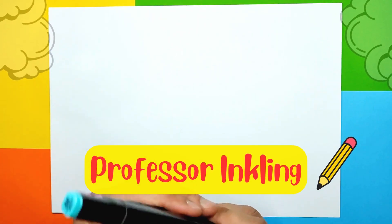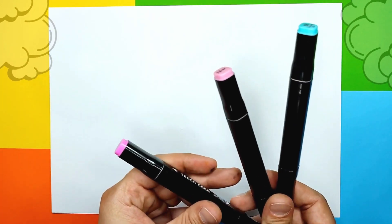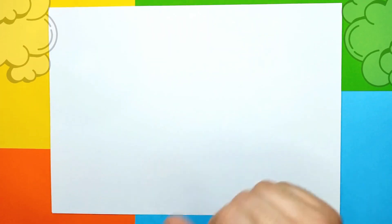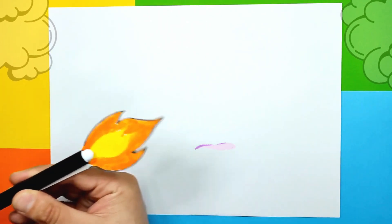Today we are going to draw Professor Inkling from Octonauts and we're gonna use a few markers, one piece of paper, and a black marker or rocket marker for the drawing parts. So let's get started!